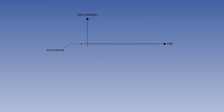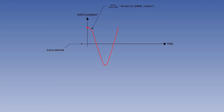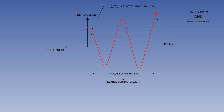The final type of dynamic stability is called divergent oscillation. The red dot is displaced from equilibrium, and when the disturbing force is removed, the initial reaction is to start back towards equilibrium — illustrating positive static stability. But over a period of time, the dot continues to oscillate through equilibrium with an increase in displacement, illustrating negative dynamic stability. We have positive static and negative dynamic stability.